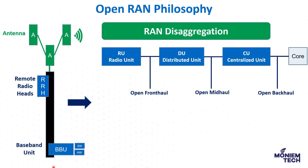With disaggregation, we also get a decoupling of hardware and software. In the traditional approach, the software and hardware are bundled and tied to the same vendor. However, in Open RAN, you can get hardware from vendor A and software from vendor B, and they can interoperate with each other very well. There are many benefits from RAN disaggregation.